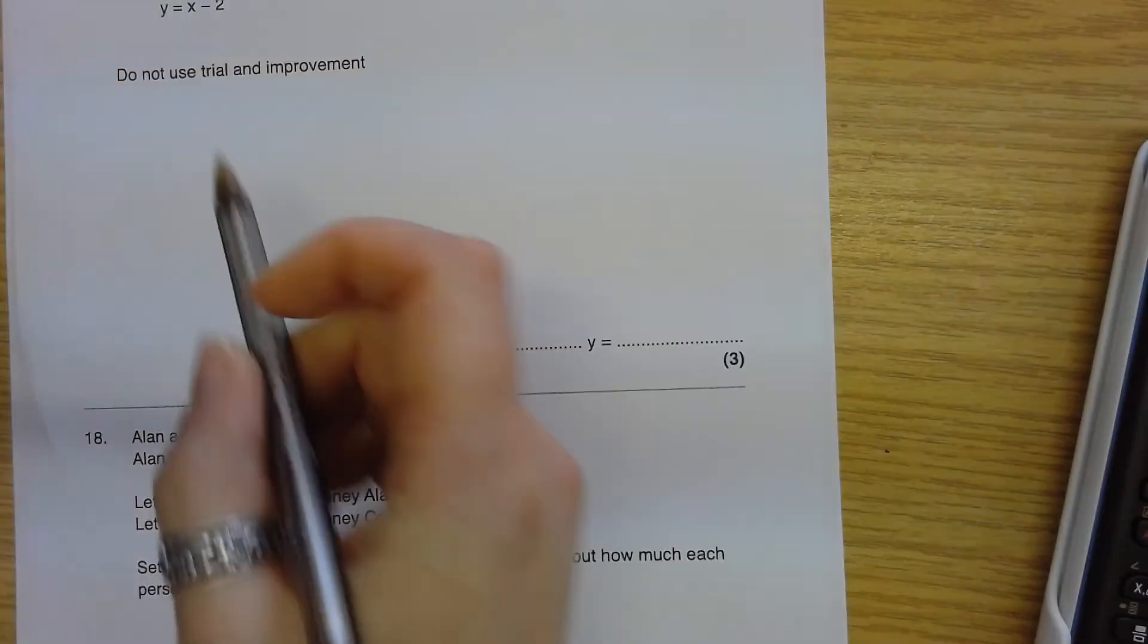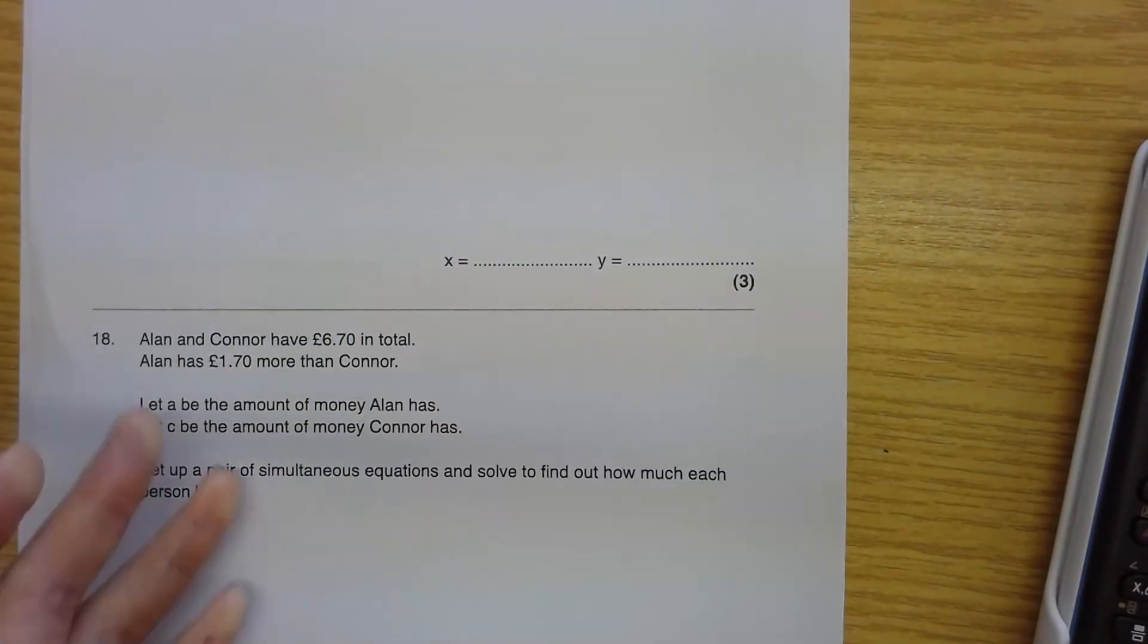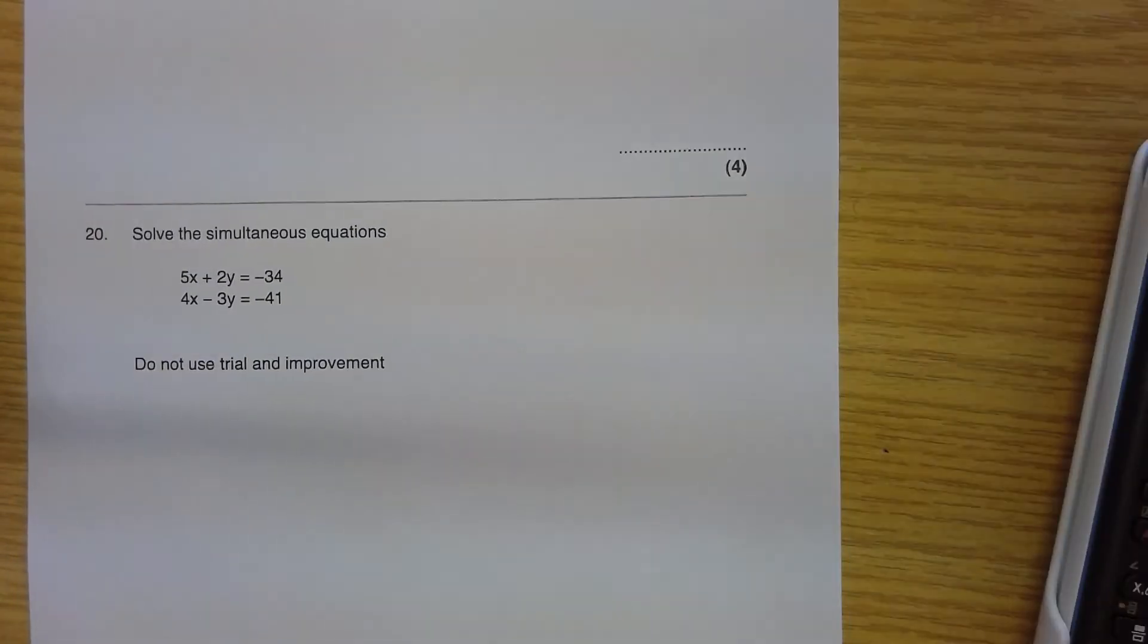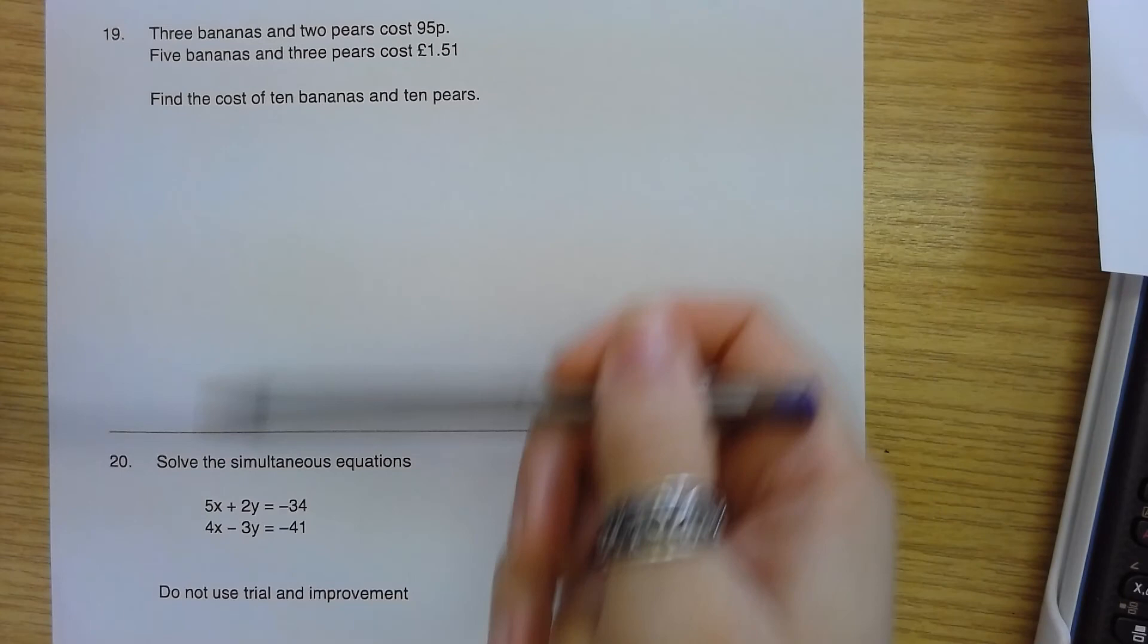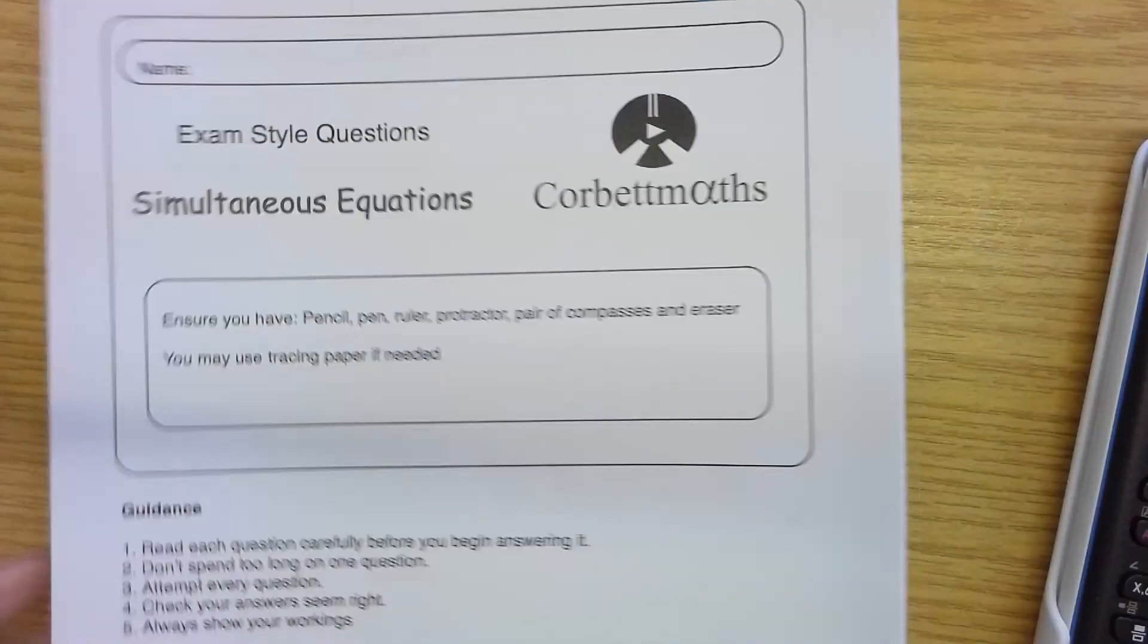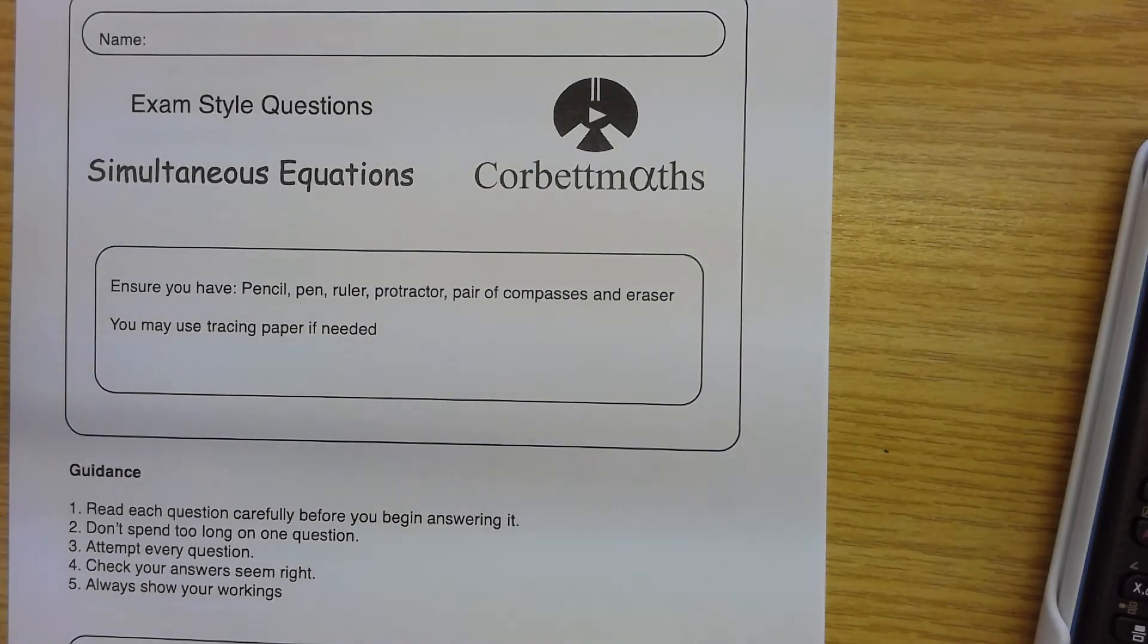Let's just check a few more. That one, once again, would need rearranging. Underneath, you're having to set up and solve simultaneous equations. We've done a question like that before. And the same on the last two. So that's the end of my video for today on using the equation facility on the Casio FX CG50 to help you solve simultaneous linear equations from the Corbett Maths booklet. Thank you very much.